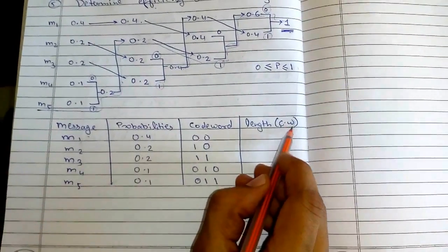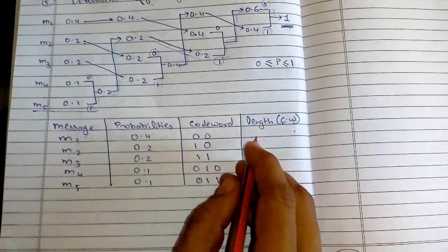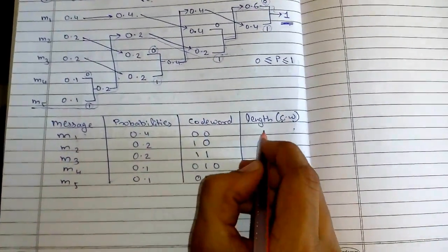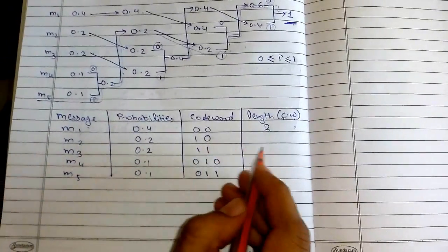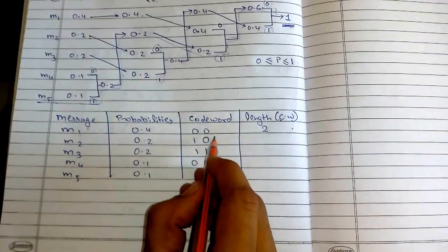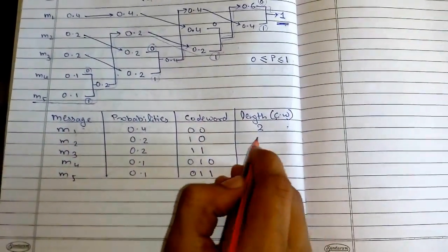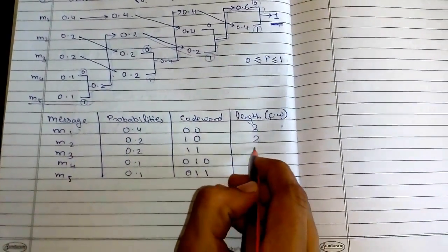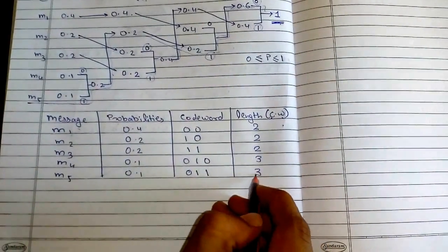Now the codeword lengths: we just count the number of bits. M1 has length 2, M2 has length 2, M3 has length 2, M4 has length 3, M5 has length 3. We have completed tabulating the codeword and the length of each codeword.